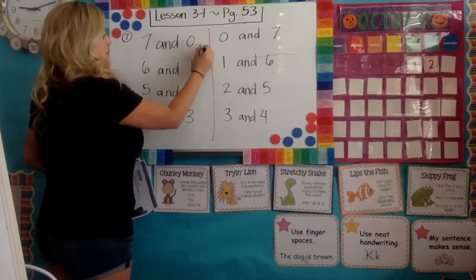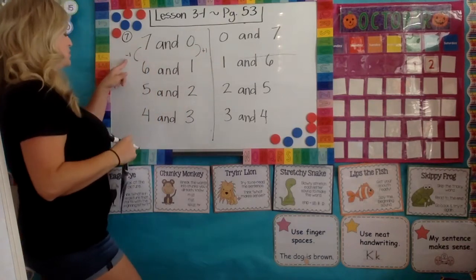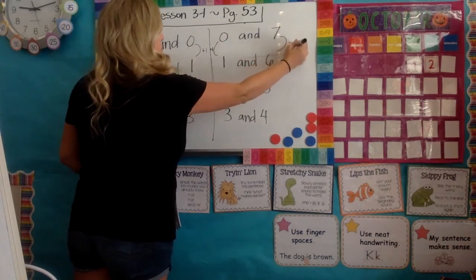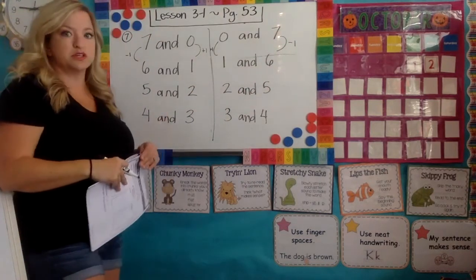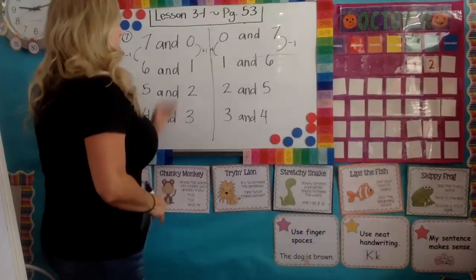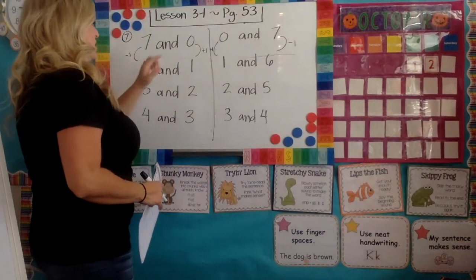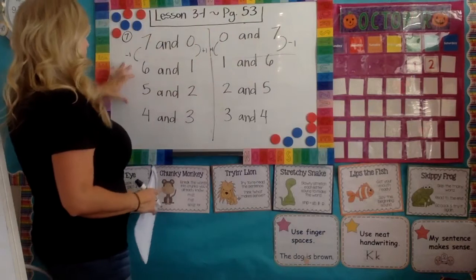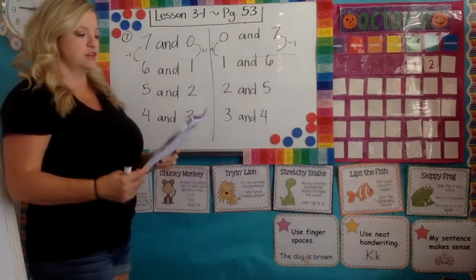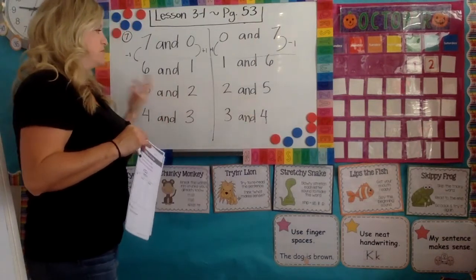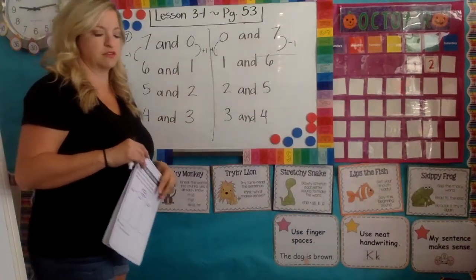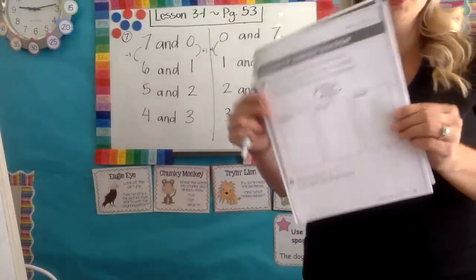This number from here to here is growing by one; this number is shrinking by one — it's getting smaller each time. Same thing on the other side: plus one on one column, minus one on the other. We talked about symmetry with butterflies — this is completely symmetrical, it is mirrored. If I draw a line down the middle, it's the exact same on both sides: zero, one, two, three and seven, six, five, four. Those are all the ways you can show seven.